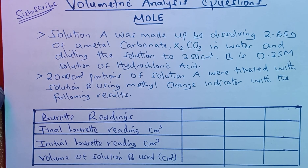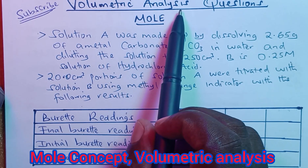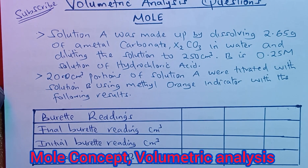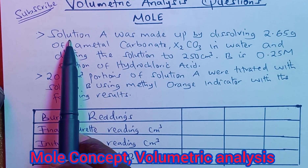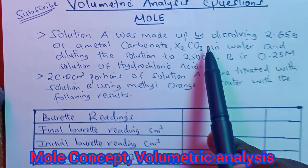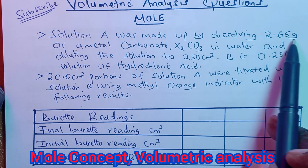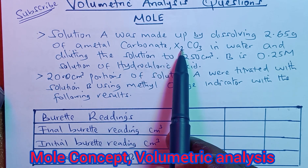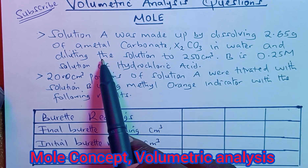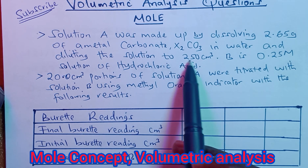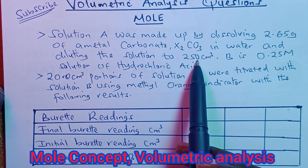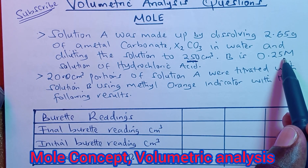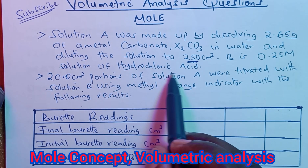Welcome back. We are looking at volumetric analysis questions under Mole Concept from A-Level Chemistry. The question reads: Solution A was made by dissolving 2.5 grams of a metal carbonate with the formula X₂CO₃ in water and diluting the solution to 250 cm³. Solution B is a 0.25 molar solution of hydrochloric acid.